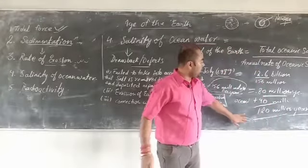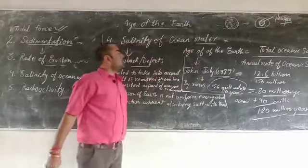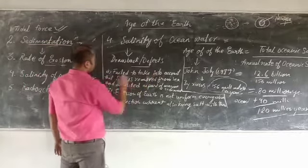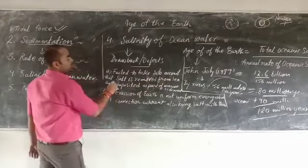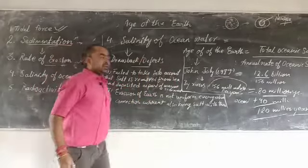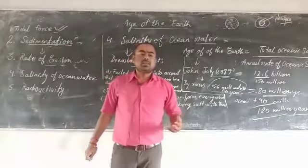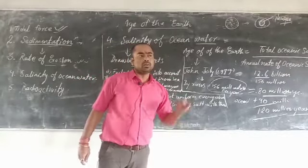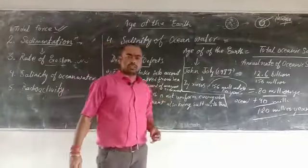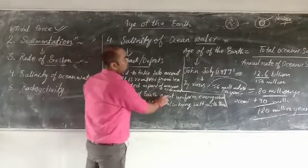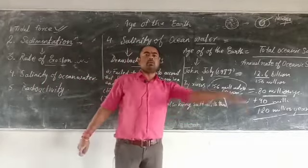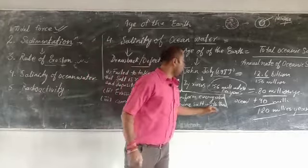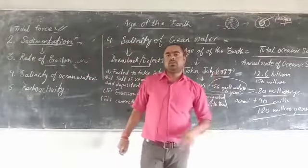There are certain drawbacks of this method. First, John Jolly failed to account for the fact that salt is removed from the sea and deposited as part of marine sediment. Second, ocean water can become saline not only due to river deposition but also due to marine deposits. Third, erosion of the earth is not uniform — every river does not bring the same amount of salinity every year. Fourth, convection currents also bring salt and deposit it into the ocean water.